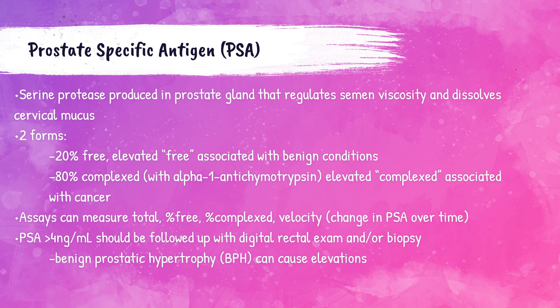Prostate-specific antigen, or PSA, is a protein produced by both cancerous and non-cancerous tissues in the prostate — a small gland that sits below the bladder in men. PSA is mostly found in semen, which is also produced in the prostate, and small amounts ordinarily circulate in the blood. The PSA test can detect high levels of PSA that may indicate the presence of prostate cancer; however, many other conditions such as an enlarged or inflamed prostate can also increase PSA levels, making interpretation complicated. There are two forms of PSA tested: free PSA, which circulates freely in the bloodstream and is often associated with benign conditions, and complex PSA, which is PSA bound to alpha-1-antichymotrypsin — increased levels of complex PSA are more suggestive of a cancerous condition of the prostate.